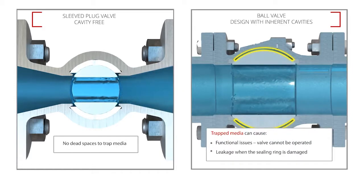Entrapped media can cause functional issues in which the valve cannot be operated or creates an increased risk of leakage, particularly when the sealing ring gets slightly damaged.